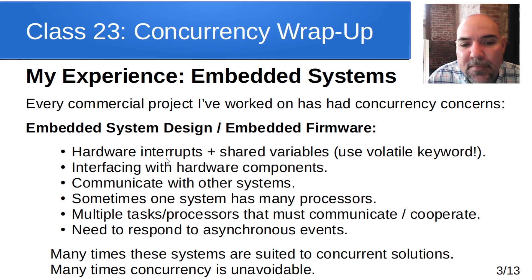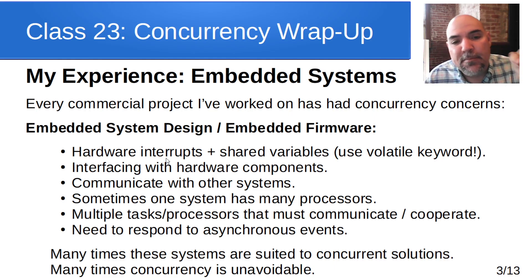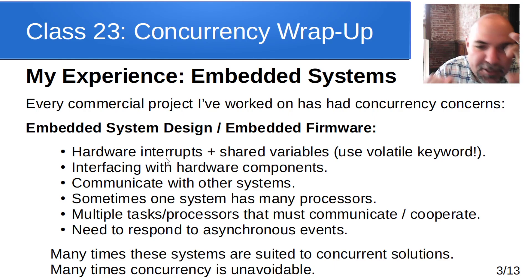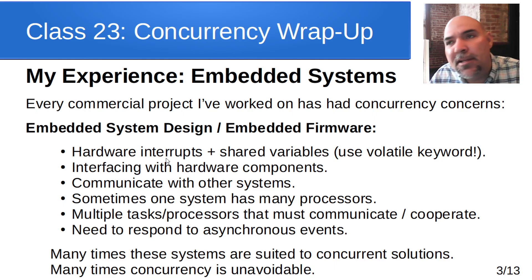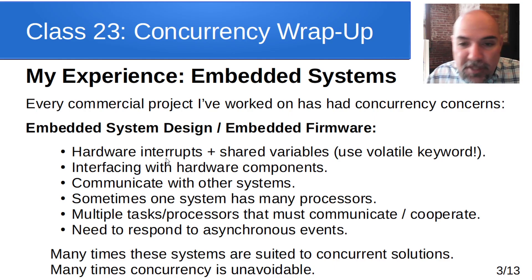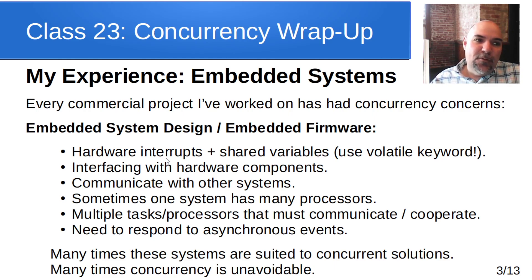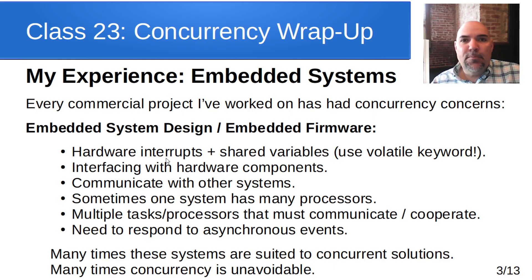Anywhere you have hardware interrupts caused by external sources — another piece of hardware, a communication interface, or a peripheral like a timer — if you have a shared variable, you must be careful when accessing it. You could have two threads, or the main program and an interrupt handler, both accessing that shared variable. You need to understand the volatile keyword, because the optimizer may use a register for that shared variable, and if an interrupt handler also accesses it, it won't see the updated value.